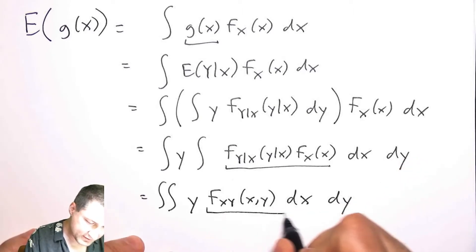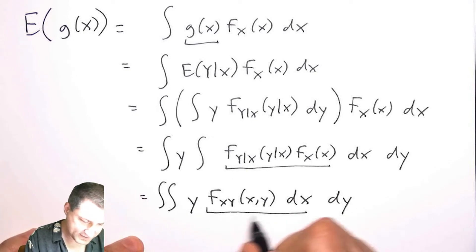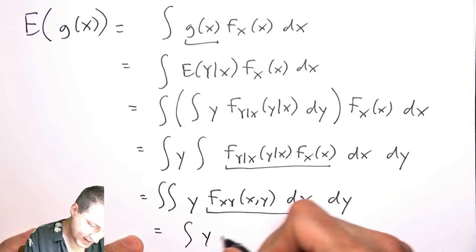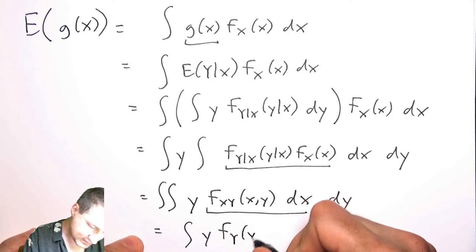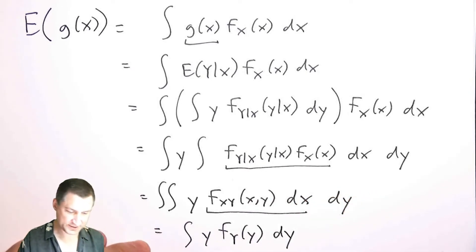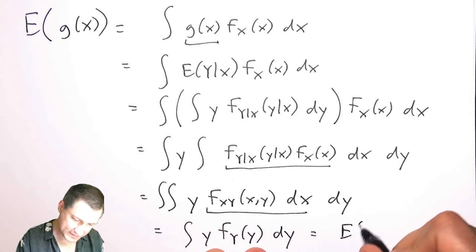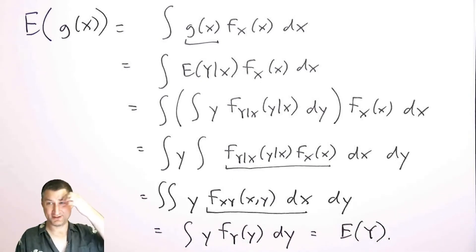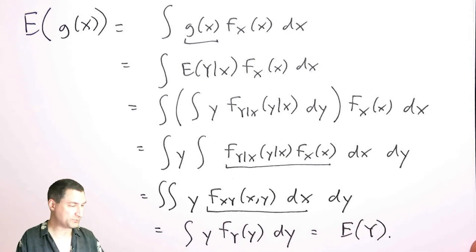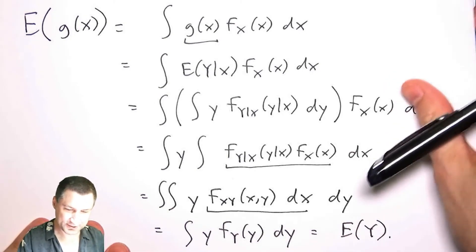But this part, integrating out this, is just the marginal in y. So this is just the integral y times this marginal function dy. And this is just the definition of the expected value of y. So this is like a long way to go just to kind of come up with the answer that seems kind of logical and obvious.